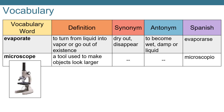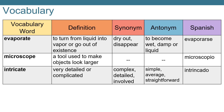Then we have the term microscope. A microscope is a tool used to make objects look larger. We don't really have any synonyms or antonyms for this one. Finally, we have the word intricate. Intricate means very detailed or complicated. A synonym, or word that means the same, might be complex, detailed, or involved. And an antonym, or opposite, would be simple, average, or straightforward.